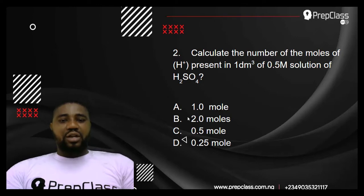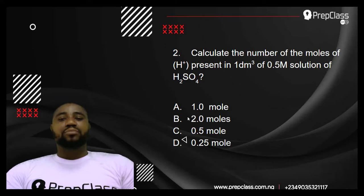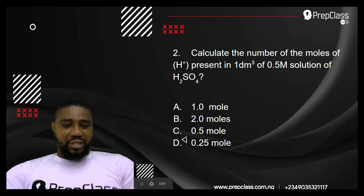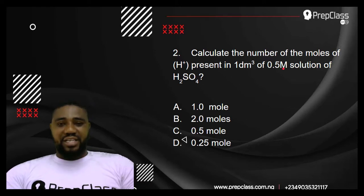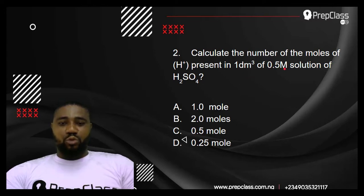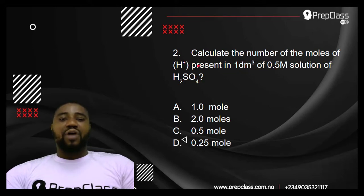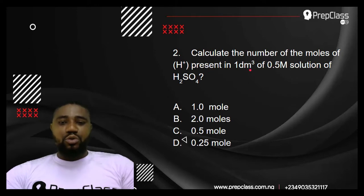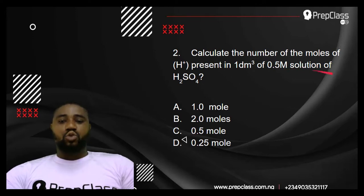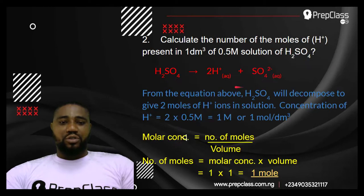Question number 2: Calculate the number of moles of hydrogen ion present in one dm³ of 0.5 M solution of H₂SO₄. The M here means moles per dm³, so 0.5 M is 0.5 moles per dm³, which is the molar concentration of the acid. So we need to find the number of moles of hydrogen ion present in one dm³ of 0.5 moles per dm³ of H₂SO₄.